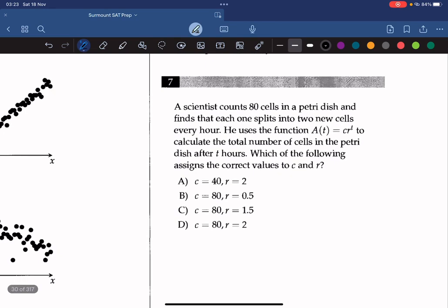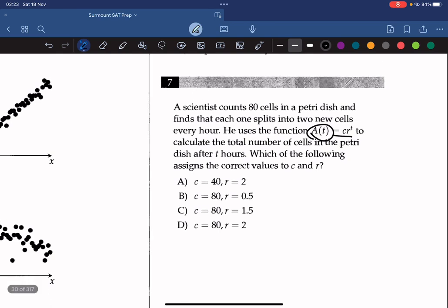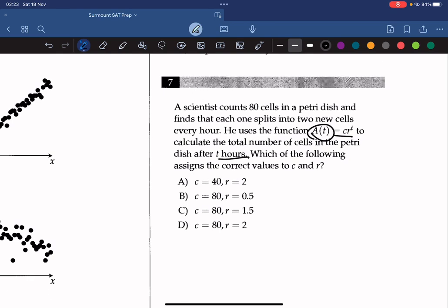A scientist counts 80 cells in a Petri dish and finds that each one splits into two new cells every hour. He uses the function A(T) equals C times R to the T to calculate the total number of cells in the Petri dish after T hours, which of the following assigns the correct values to C and R. Alright, so we know that the cell doubles every hour, right? So the rate must be 2. And the initial count must be 80. So the correct answer is D.